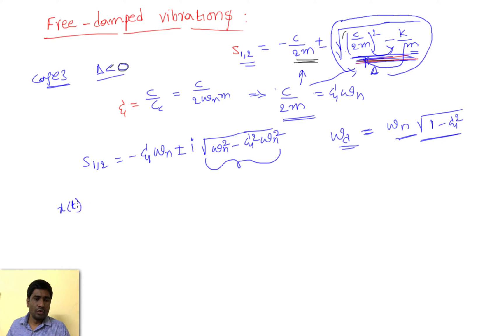Now I will write the solution: x(t) equals d1 times e to the power minus s1. So minus s1 is xi into omega n plus i into omega d. I am multiplying the whole thing with t, because if you recall, we initially started the solution by assuming e to the power st, with e to the power minus xi omega n t as common.